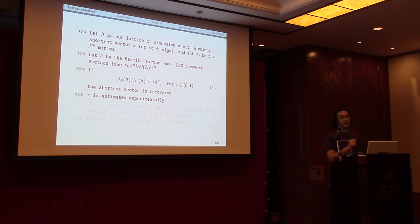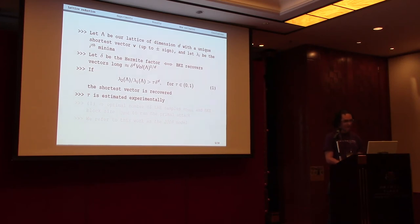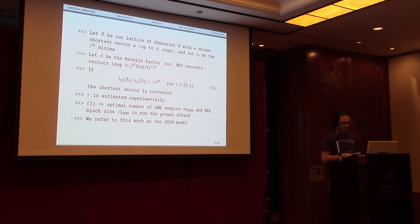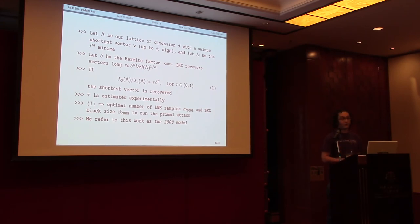We win with high probability if one has a lattice with a gap larger than a certain power of the Hermite factor for the algorithm being used — not the full power, but some fraction tau, which is estimated based on experiments. This gives condition one for winning. In the case of LWE, we construct this lattice from M LWE samples and use BKZ with block size beta to reduce the basis. We can then extract the optimal number of samples and the smallest beta possible in order to recover the shortest vector. Throughout the presentation we refer to this as the 2008 model.